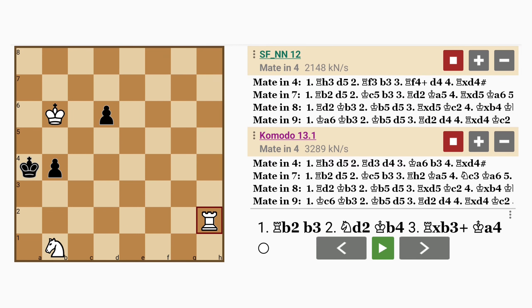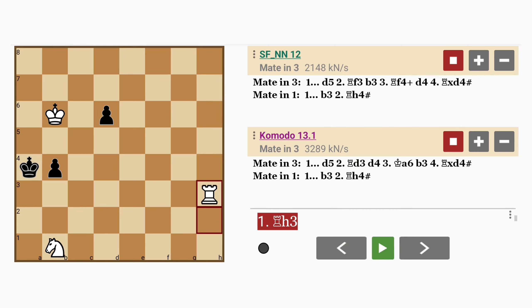The key move is actually rook to h3. What does this achieve? This guards the b3 square, so that the black king cannot escape there.